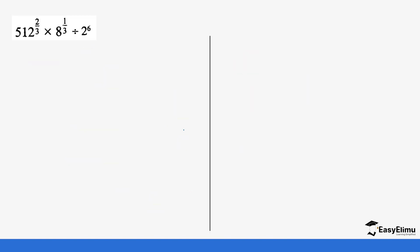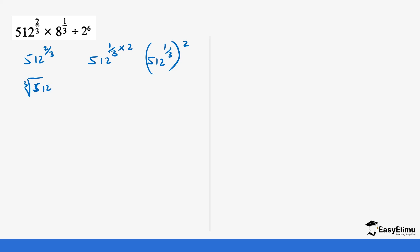Let's do another question. We have a slightly bigger expression, so we tackle one part at a time. We start with 512^(2/3). We separate the fraction: 2/3 is the same as 1/3 × 2, which we write as (512^(1/3))^2. Now 1/3 means cube root, so this becomes the cube root of 512, then squared. Since 512 = 8 × 8 × 8 = 8^3, the cube root of 8^3 is 8.